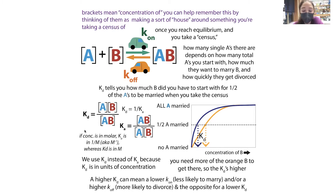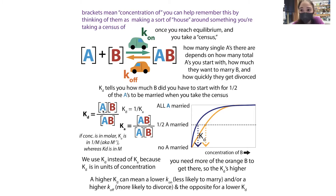Basically, no matter what concentrations you start with, you're going to end up with this proportional relationship where the equilibrium constant equals the concentration of your products multiplied together, divided by the concentration of your reactants. We're talking in the reverse direction, so our Kd is going to equal the concentration of A times the concentration of B, divided by the concentration of AB.